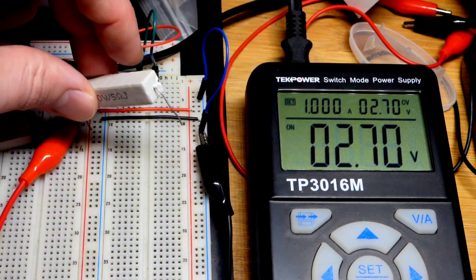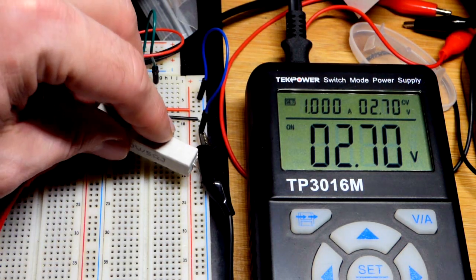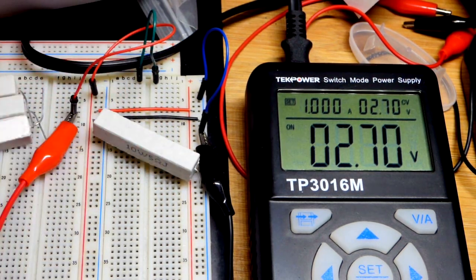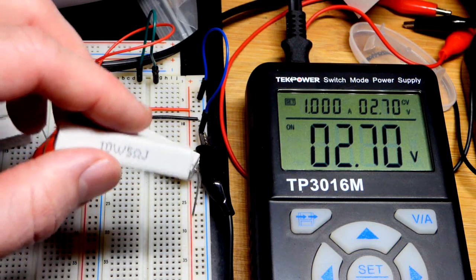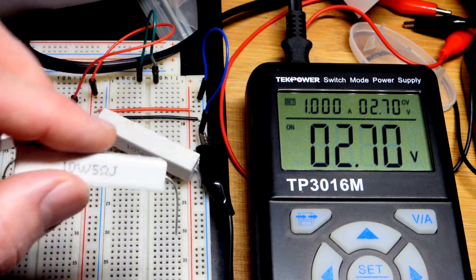So we're going to start with one 5 ohm resistor. This is a 5 ohm 10 watt resistor, and I got 5 of them right here. So we can put them in parallel.